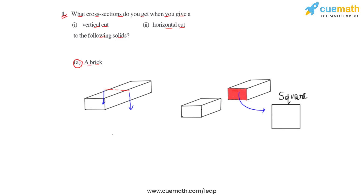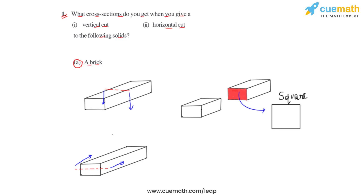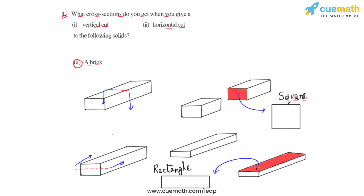If we cut the same brick horizontally, the solid is again divided into two parts and the cross section represents a rectangle. To summarize: cutting the brick vertically gives a square cross section, and cutting it horizontally gives a rectangle.